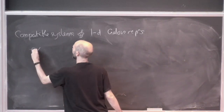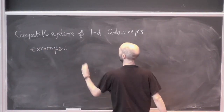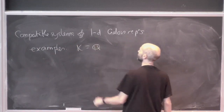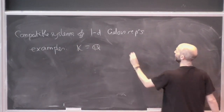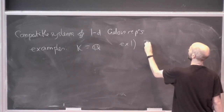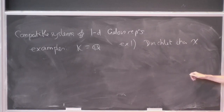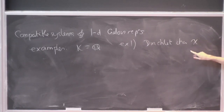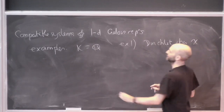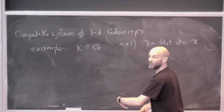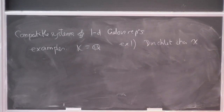Examples. Let k be Q. This is what we did at the very beginning of that last lecture. We had a Dirichlet character chi, and that was a Galois representation to GL1 of a number field with finite image. We just pretended it was a compatible system of one-dimensional Galois representations by embedding the number field into the l-adic fields.